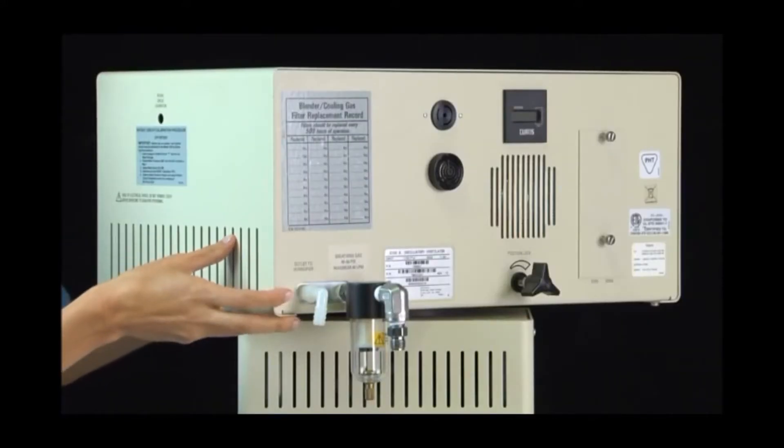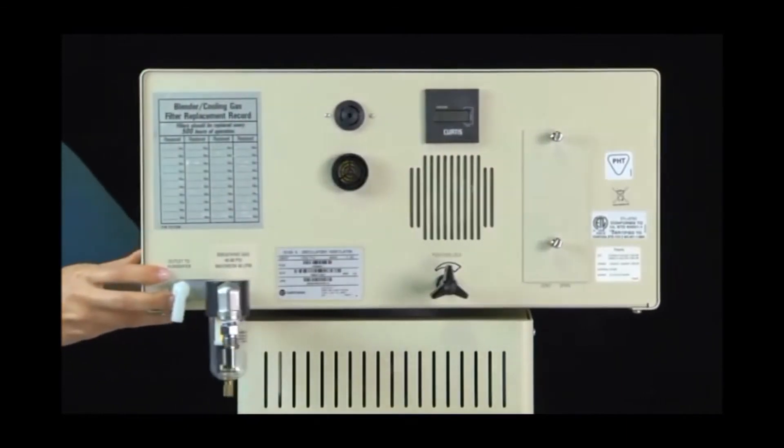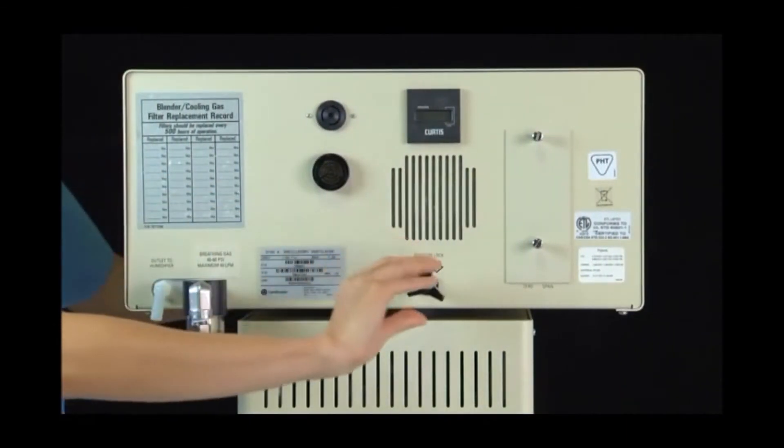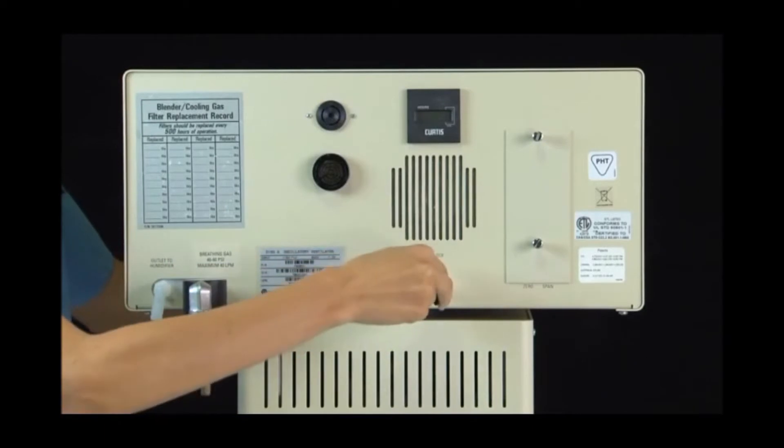The head of the ventilator may be turned 270 degrees for optimal viewing by the operator. To lock the head into place, turn the position lock clockwise.